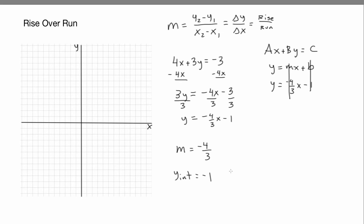The y-intercept gives us the point (0, negative 1). We can plot that: 0 means don't go left or right, and negative 1 is right here.